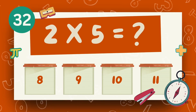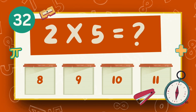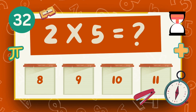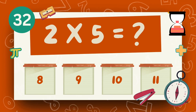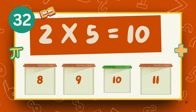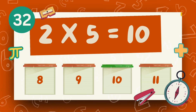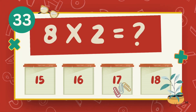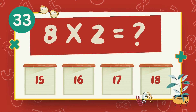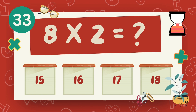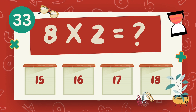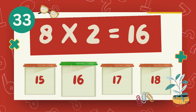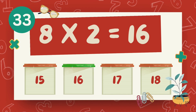What is 2 multiply 5? The answer is 10. What is 8 multiply 2? The answer is 16.